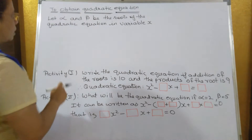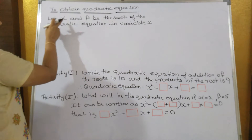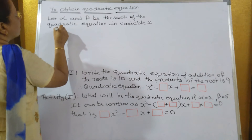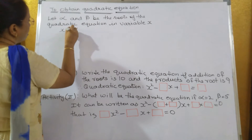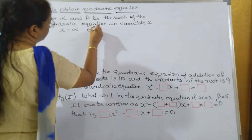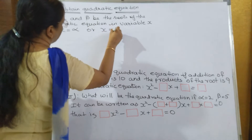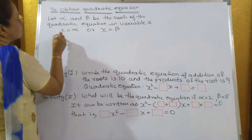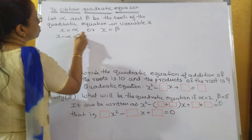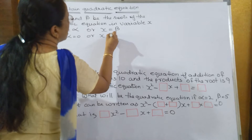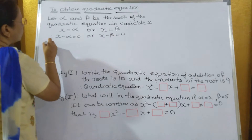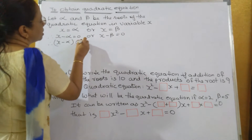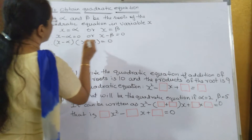How to obtain a quadratic equation? Let alpha and beta be the roots of the quadratic equation in variable x, meaning one root is alpha and the other is beta. Taking alpha to one side gives x minus alpha equals 0, or x minus beta equals 0. Therefore, x minus alpha into x minus beta is equal to 0.